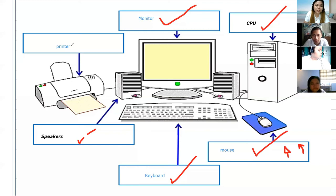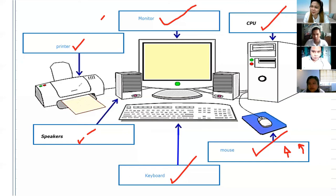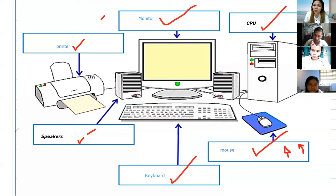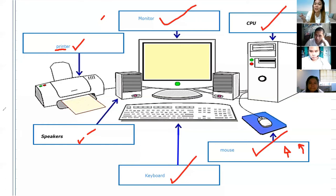How about this one, Aika? We can print — we can copy documents. What else? We can put pictures. Yes, we can see pictures coming out from the printer. Why does it call printer? Because we can print. Very good. So we can print pictures, files, and documents from the computer. From the soft copy, we can print it into hard copy and make it into a paper. Good job.